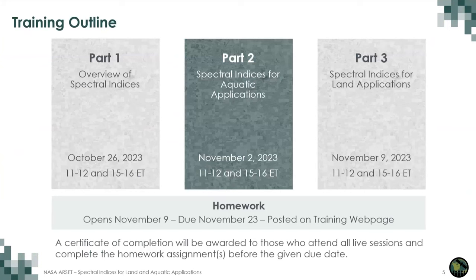This is part two. Last week we had part one, which was an overview of Spectral Indices. Today we're concentrating on aquatic applications. We have two different times: 11 to 12 or also 3 to 4 p.m. Eastern time. We will have one homework that will open on the last day, next week, November 9th, and it's due two weeks after, November 23rd. If you attended all three parts and completed the homework, you will eventually receive a certificate of completion.